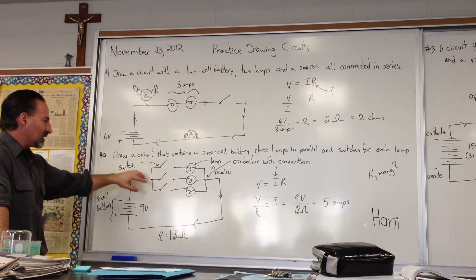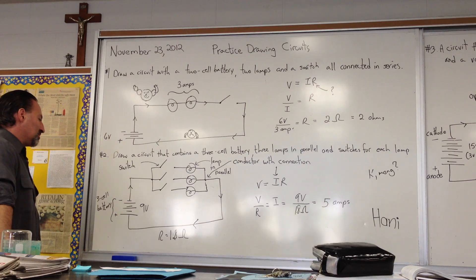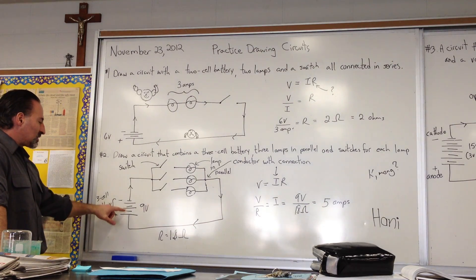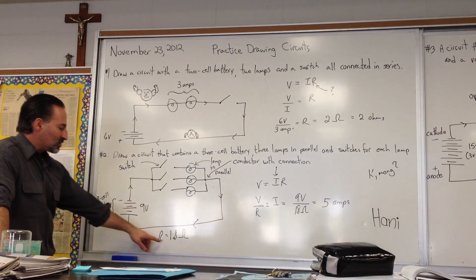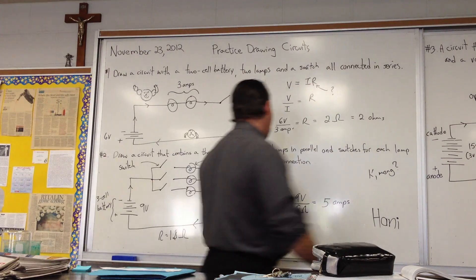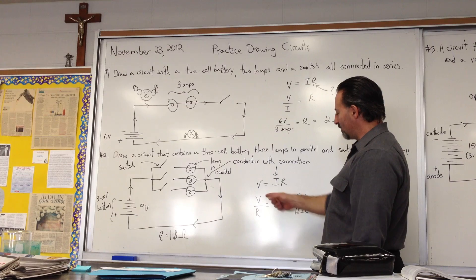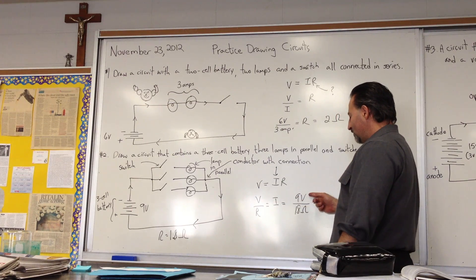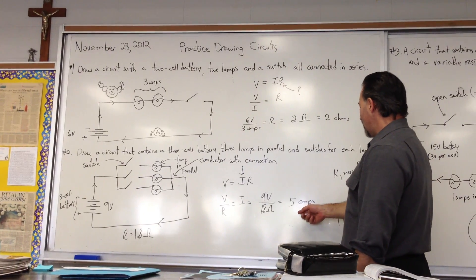If we assume that this has 3 volts per cell, that's a 9-volt battery, and if we assume that the resistance in this circuit is 1.8 ohms, we can calculate our current flow using V equals IR, the rearranged equation to solve for I. V over R equals I, 9 volts divided by 1.8 ohms will give us a flow of 5 amps.